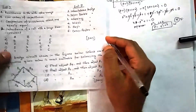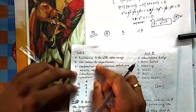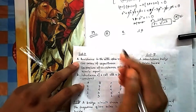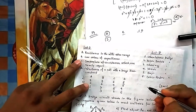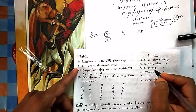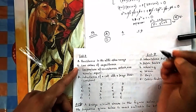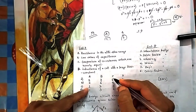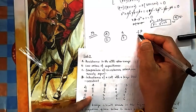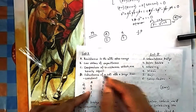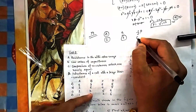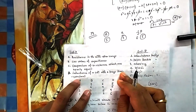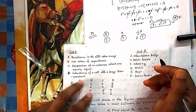Matching the list: resistance in milliohms requires Kelvin double bridge, so A matches with 2. Low-loss capacitance uses Schering bridge, so B matches with 3. Comparison of nearly equal resistances uses Carey Foster bridge, so C matches with 6. Finally, D — inductance with large time constant — uses Hay bridge, so D matches with 5. The answer is option A.